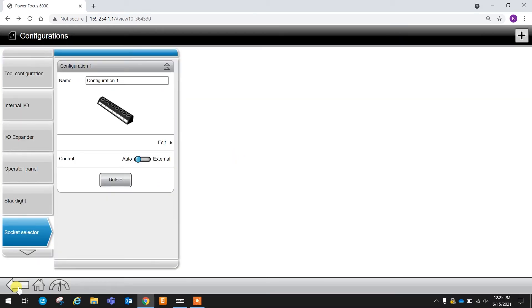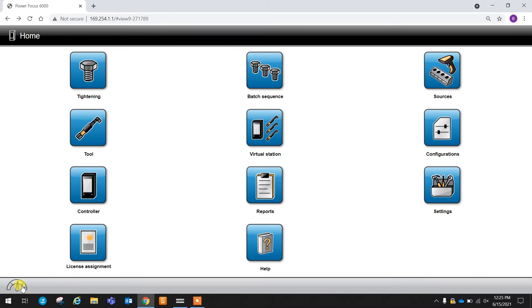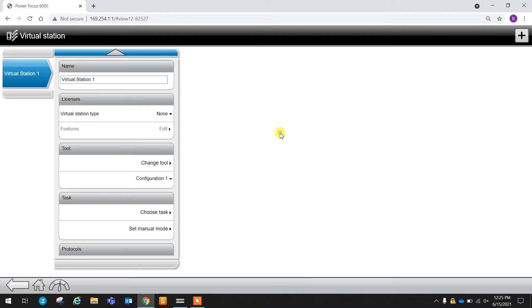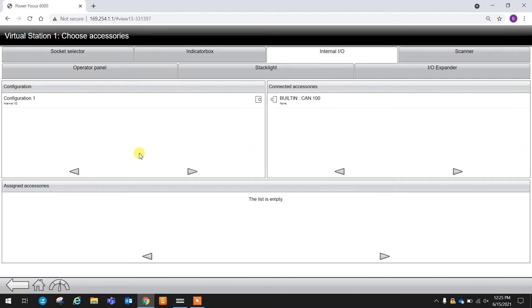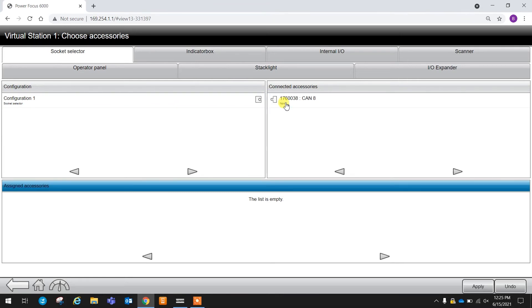So now that we have our socket selector completely configured, we're going to go assign the accessory. We come back in here, we go and find our socket selector, we assign our configuration, and we assign it, and then we're going to make sure we hit the apply button. From here you can see we have the accessory connected, and that's all there is to it.